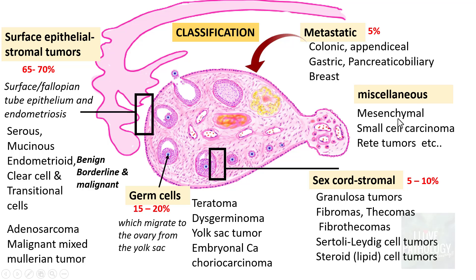Miscellaneous tumors include mesenchymal tumors such as leiomyoma or leiomyosarcoma, small cell carcinomas of the ovary, and tumors of the rete ovary such as rete cell adenoma or adenocarcinoma. In summary, the most common ovarian tumors are surface epithelial stromal tumors, followed by germ cell tumors, sex cord stromal tumors, metastatic tumors, and miscellaneous tumors.